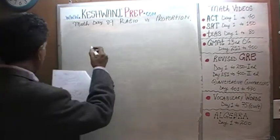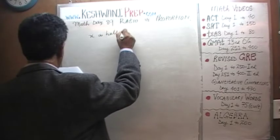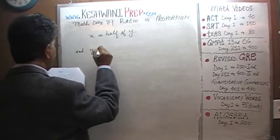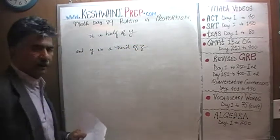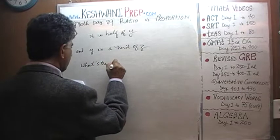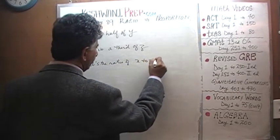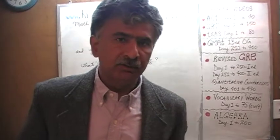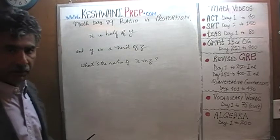Here is the first one. We are told that x is half of y, and y is a third of z. The question simply is: what's the ratio of x to z? The simplest, quickest, most efficient way to tackle this kind of problem is to just make up numbers — any number that works — as long as you don't make any careless arithmetic error.